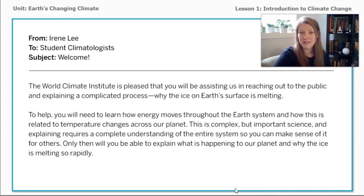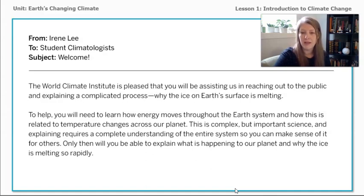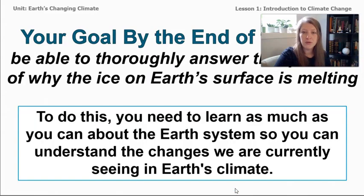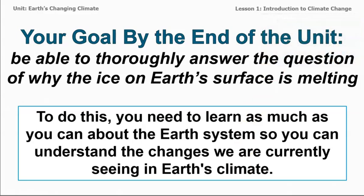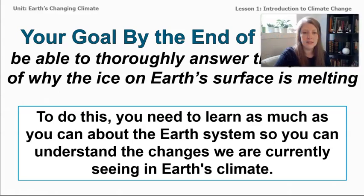The World Climate Institute is pleased that you will be assisting us in reaching out to the public and explaining a complicated process: why the ice on Earth's surface is melting. To help, you will need to learn how energy moves through the Earth's system and how this is related to temperature changes across our planet. This is complex but important science, and explaining it requires a complete understanding of the entire system. Only then will you be able to explain what is happening to our planet and why the ice is melting so rapidly. Your goal by the end of this unit is to thoroughly answer the question of why the ice on Earth's surface is melting.